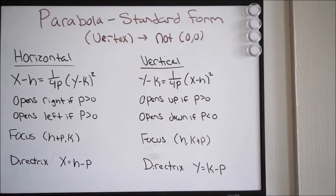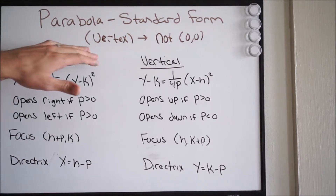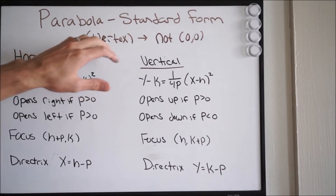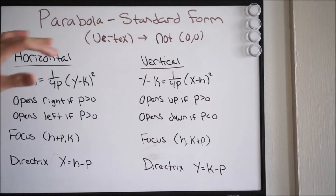Alright, so here is our next example. Staying with parabolas and writing them in standard form, we have another problem except, notice, it's a little bit different from the previous example. Now we're dealing with a vertex that is not (0,0) — not a vertex at the origin. In the past example, our vertex was at the origin, and we saw what that equation was going to look like, whether it be horizontal or vertical.